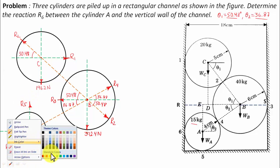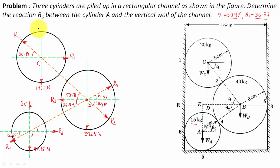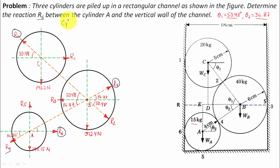We use either Lami's theorem or equations of equilibrium to compute R6. To get R6 we need R4, which requires R2. So we start from cylinder C. Lami's theorem applies only to three forces passing through a point in equilibrium. Cylinder C has exactly three forces — R1, 196.2 N, and R2 — so we can apply Lami's theorem.